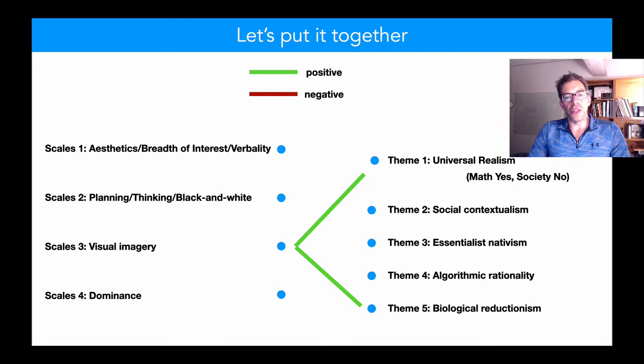Visual imagery, I've mentioned, is correlated specifically spatial imagery with the use of mathematical models. Visual imagery as a broader factor is positively associated with universal realism and biological reductionism.